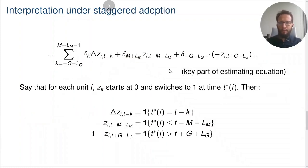Under staggered adoption, that is, when the policy is binary, each unit adopts the policy at a different time and each unit eventually adopts the policy. These variables in the estimating equation have a natural interpretation. Say that for each unit I, the policy starts at 0 and switches to 1 at time T star of I. Then, delta ZI T minus K is going to be an indicator for being K periods after the policy was adopted in unit I. For example, delta ZI T minus 3 is an indicator for being 3 periods after the policy was adopted in unit I. The variable ZI T minus M minus LM is going to be an indicator for being M plus LM or more periods in the future after the policy was adopted in unit I.